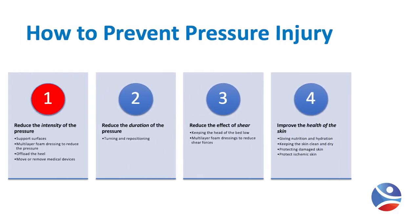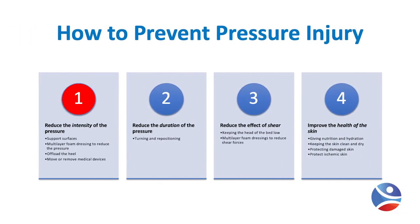I've organized the material for prevention of pressure injuries into four big buckets. One is reducing the intensity or magnitude of pressure against the soft tissue and skin. Number two is reducing the duration of pressure against the soft tissue. Number three is reducing the shear forces against the soft tissue and skin. And number four is improving the tolerance of the skin for pressure and shear.